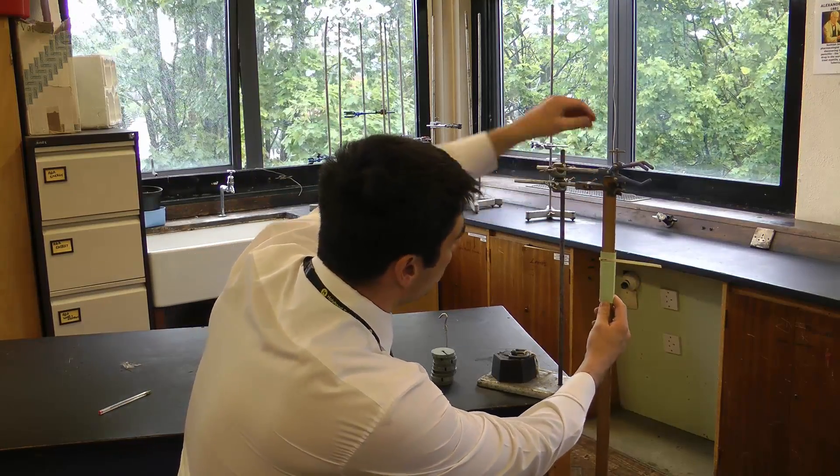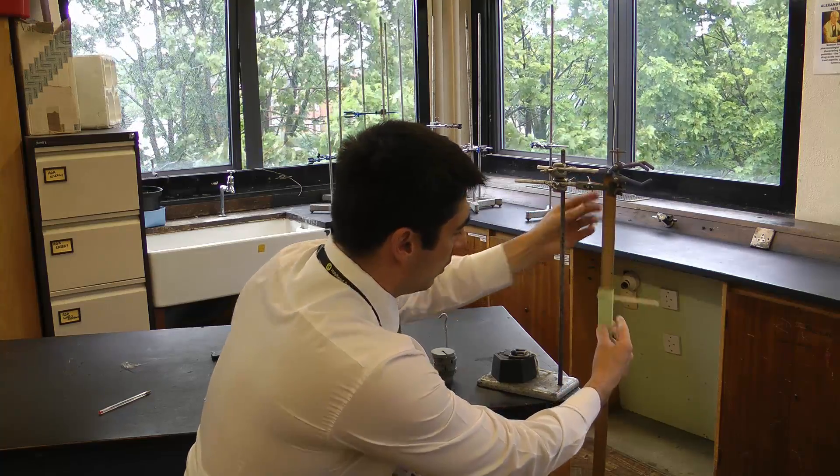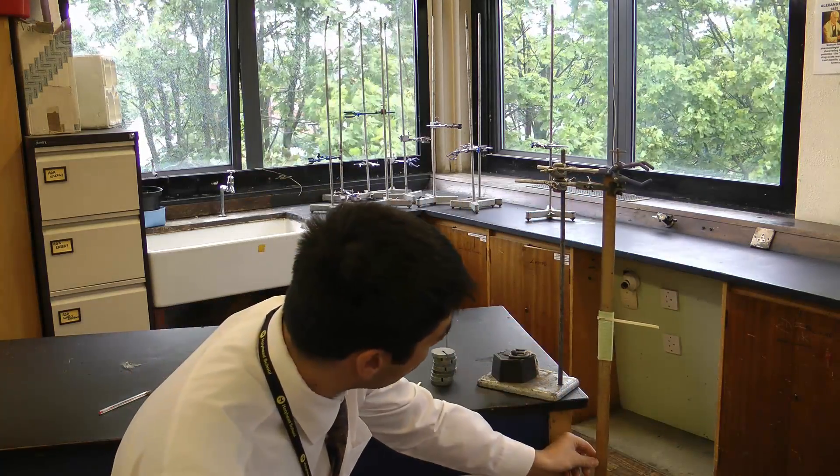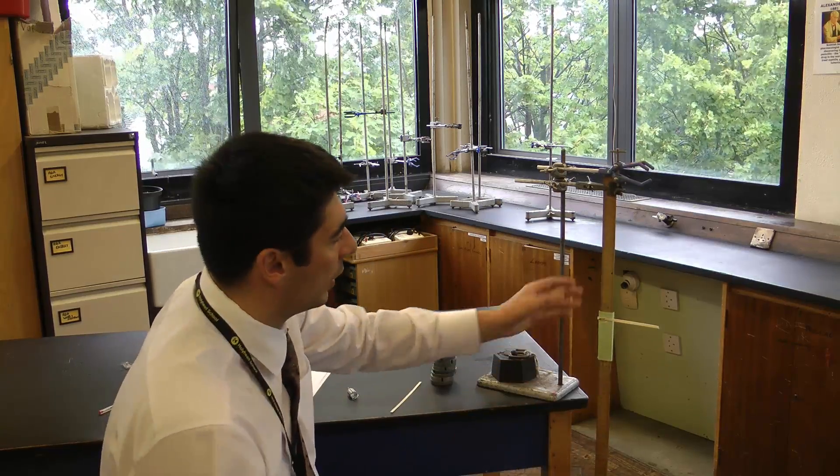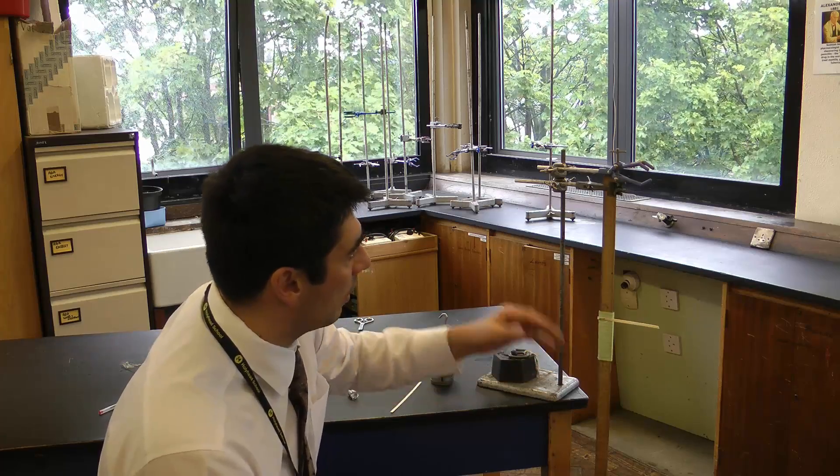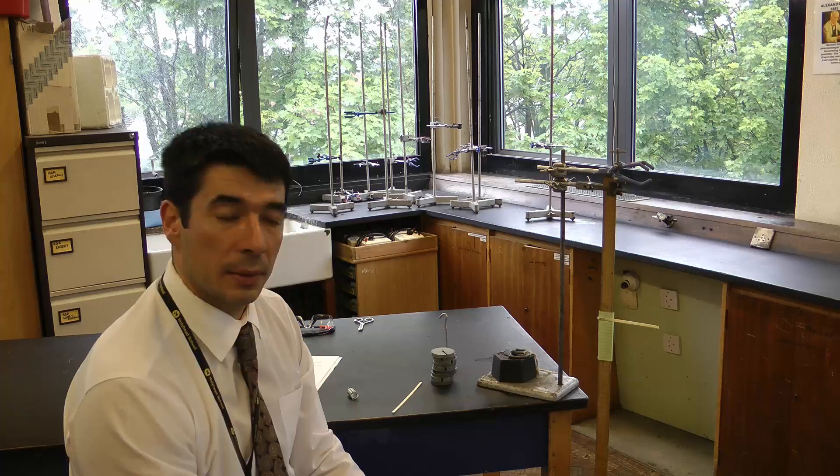I'm going to put the ruler into position. So I've got the ruler in position. I'm going to, by eye, make sure it's straight. I could use a builder's level device or maybe a plumb bob to make sure this is perfectly straight because it will affect the readings.